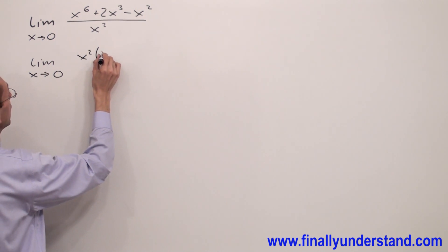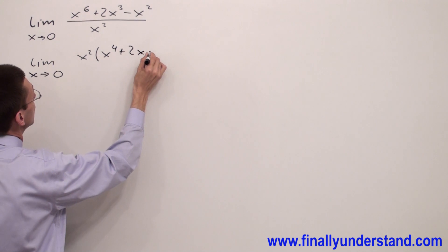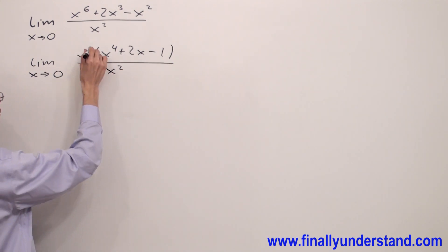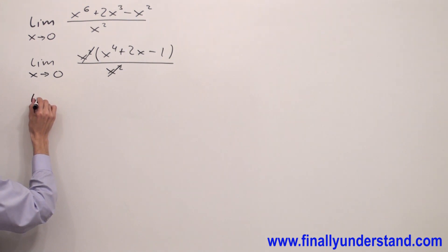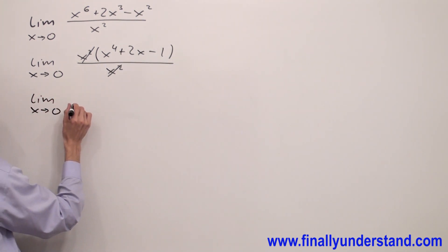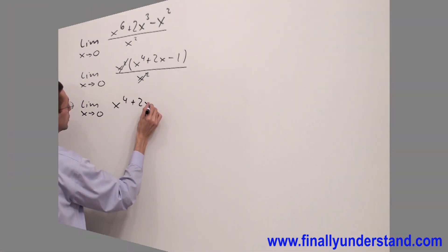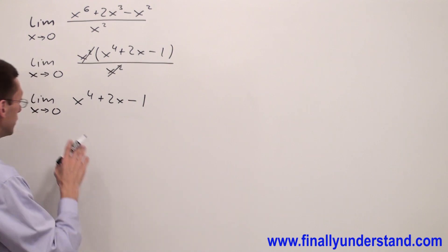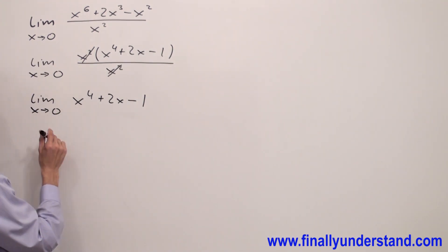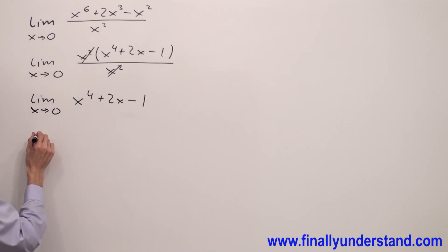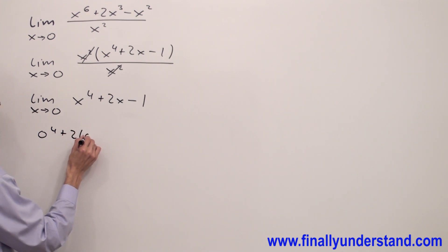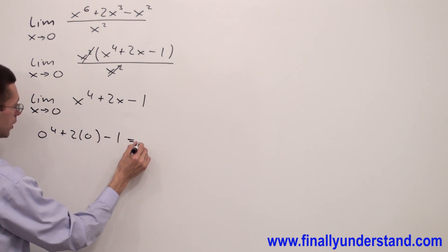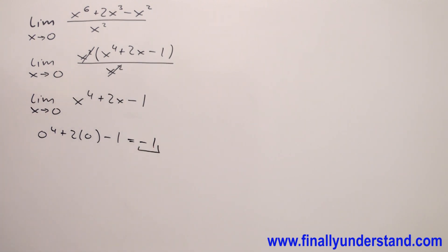After factoring x squared from the numerator, we get x squared times (x to the fourth plus 2x minus 1) over x squared. The x squared terms cancel, and I end up with the limit as x approaches zero of x to the fourth plus 2x minus 1. Since this is now a polynomial limit, we simply replace every x with 0: 0 to the fourth plus 2 times 0 minus 1 equals negative 1. That is the solution.